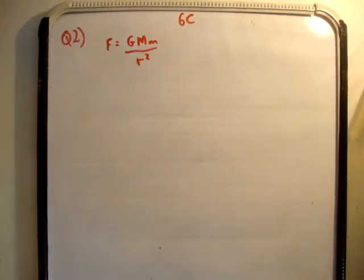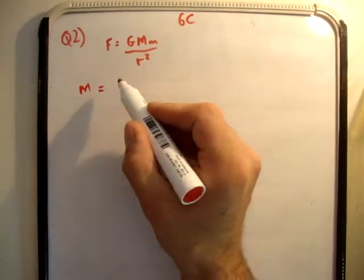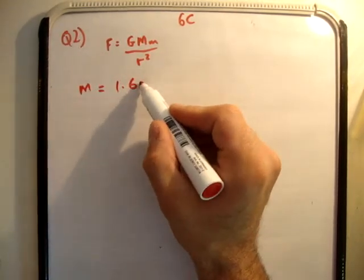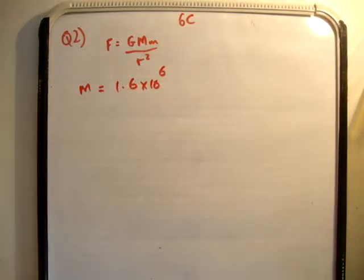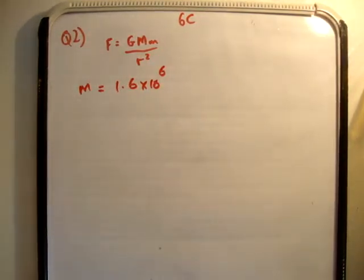We're told a meteorite, small m, is 1.6 times 10 to the 6 meters above the Earth's surface. How far is it from the Earth's center?